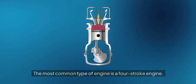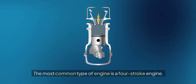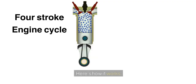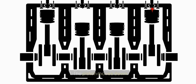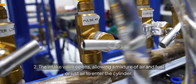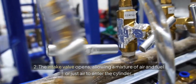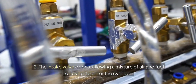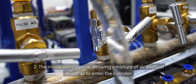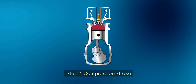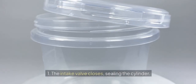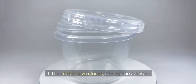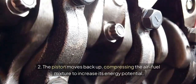The most common type of engine is a four-stroke engine. Here's how it works. Step one: intake stroke. The piston moves down and the intake valve opens, allowing a mixture of air and fuel — or just air — to enter the cylinder.